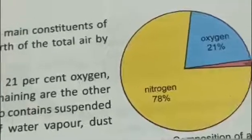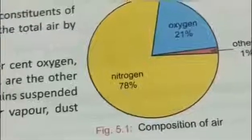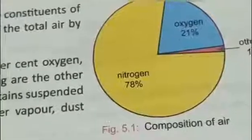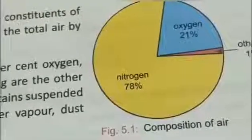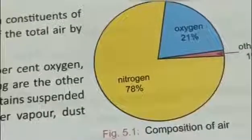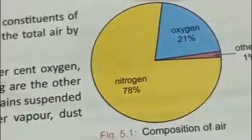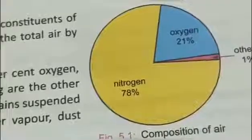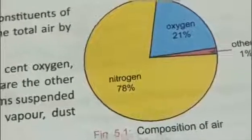In this diagram you can see nitrogen is 78 percent, oxygen is about 21 percent. When we add these two main gases, we get 99 percent. So 99 percent of air is made up of nitrogen and oxygen.